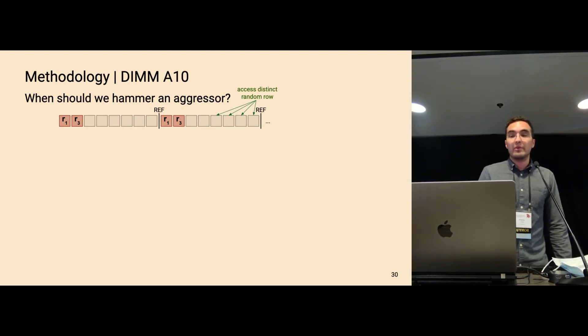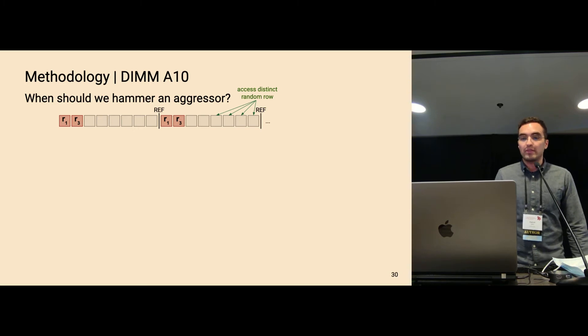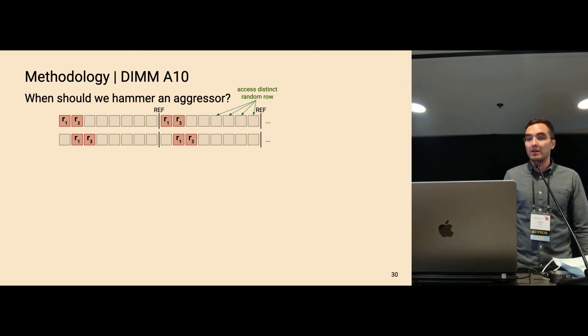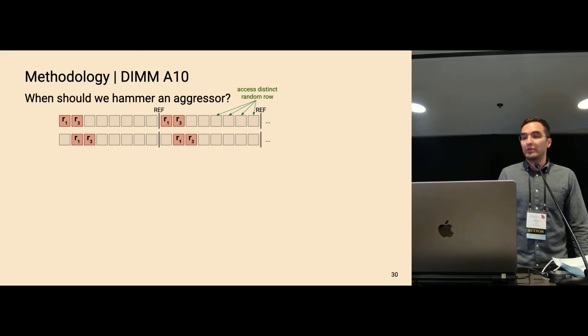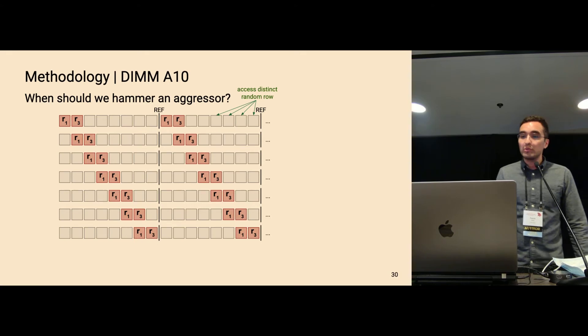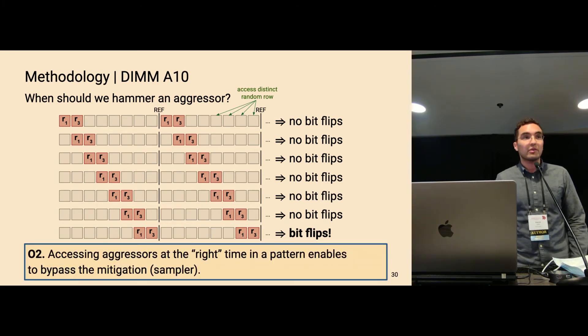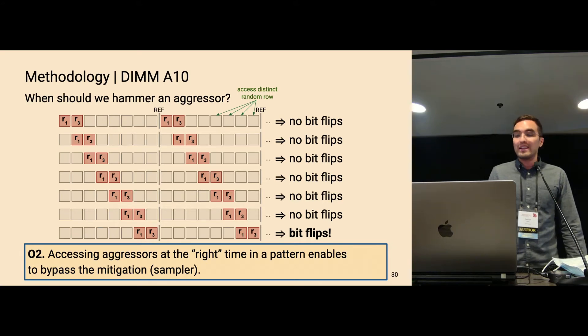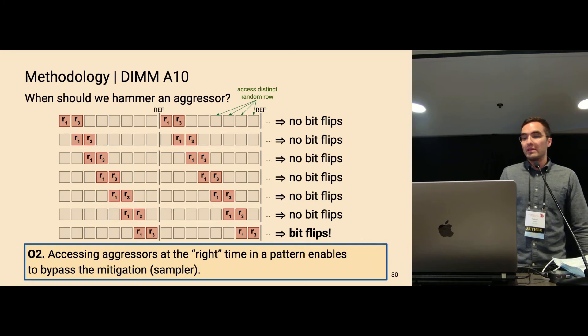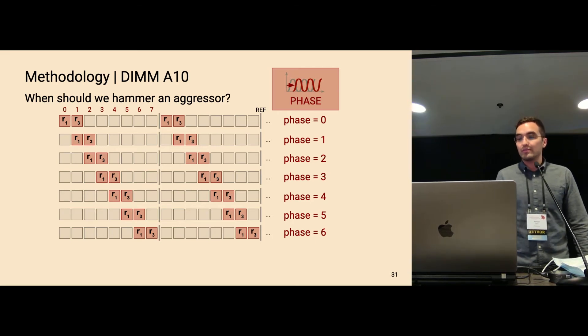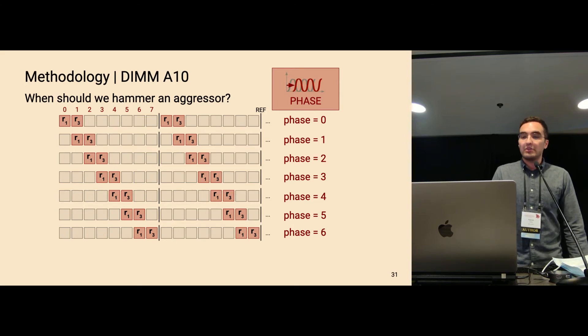So the first thing that we wanted to know, when should we hammer an aggressor? And for that, we build the following experiment. So we have a double-sided aggressor pair targeting row one and three with a length of one refresh interval, and then it is repeated. And in the next round of the experiment, we basically shift this aggressor pair by one position. So we do one access to a random row of the same bank before, and then two accesses, three accesses, and so on. And what we observed here on DIMM A10 from Samsung is that only if we hammer right before the refresh, we can trigger bit flips. And this is our second observation, that it is important to access the aggressors at the right time to bypass the mitigation. And here in this example, this can be explained by the mitigation, so the sampling might be less active or not active at all right before refresh. So this property and all other properties that I will introduce in the next slides can be mapped to concept of the frequency domain. So here the offset maps to the phase.